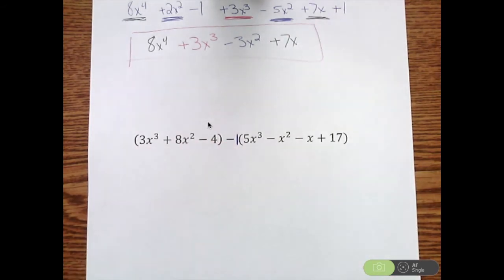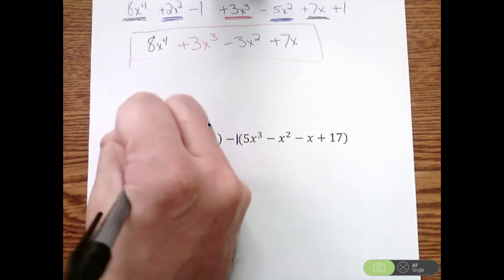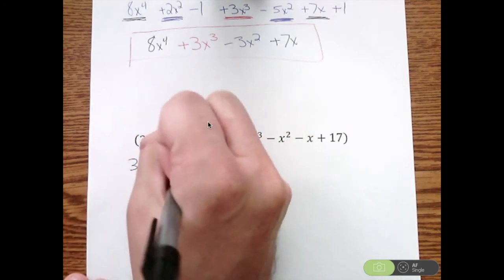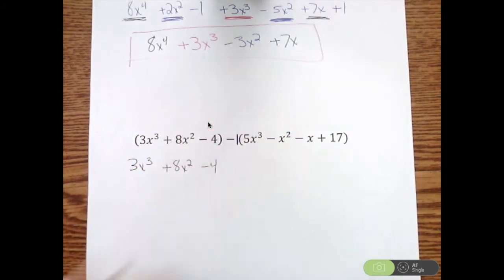So this front one, we're not going to change at all. We still have 3x cubed plus 8x squared minus 4.